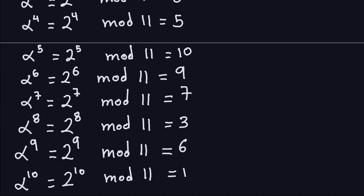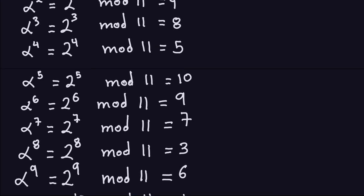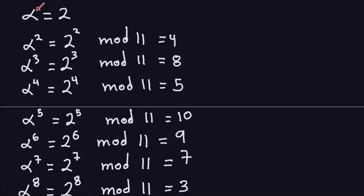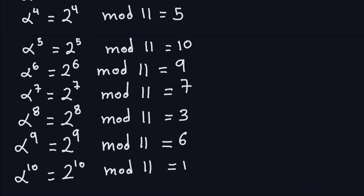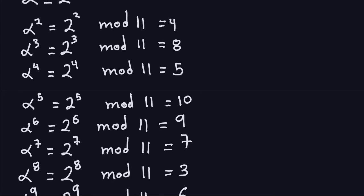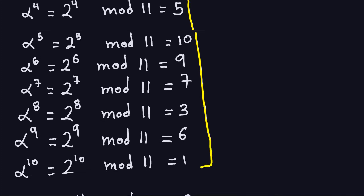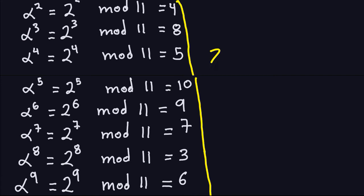The important part of this computation: I take all the powers of alpha starting at the first power and go all the way up to the 10th power. The numbers we get — from the first all the way to alpha to the 10 — are precisely the numbers that are in Z_p*, or in this case Z11*, which is all the numbers from 1 through 10.